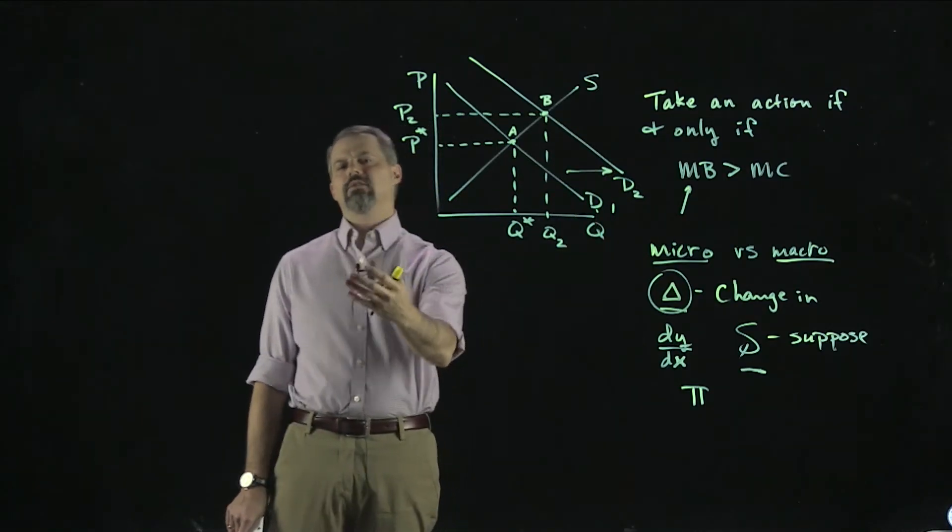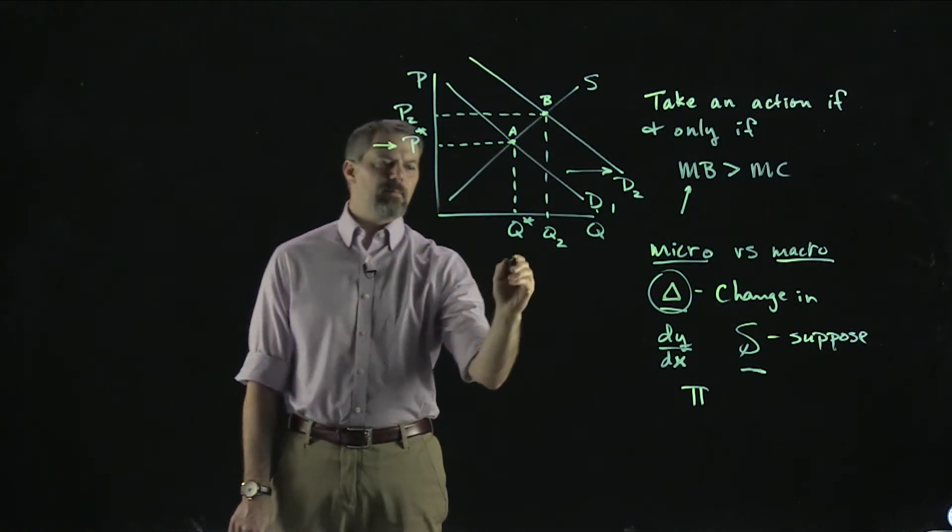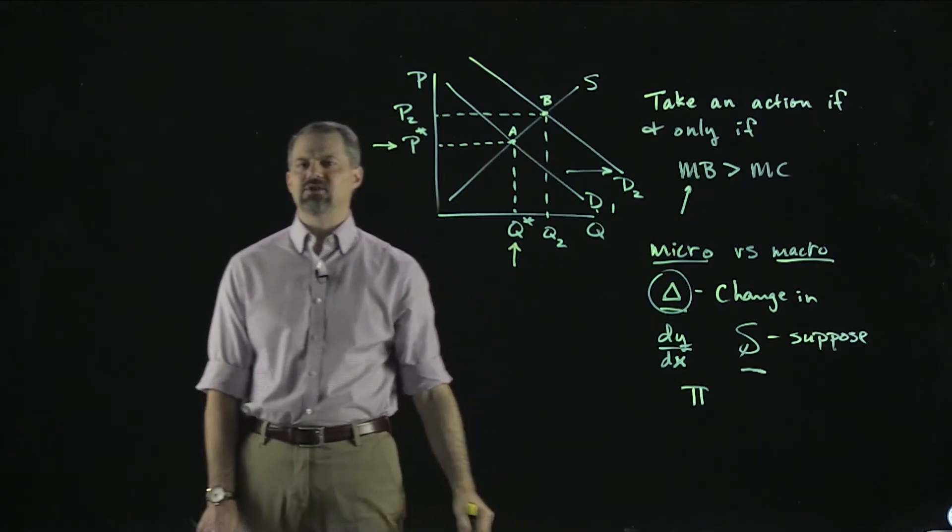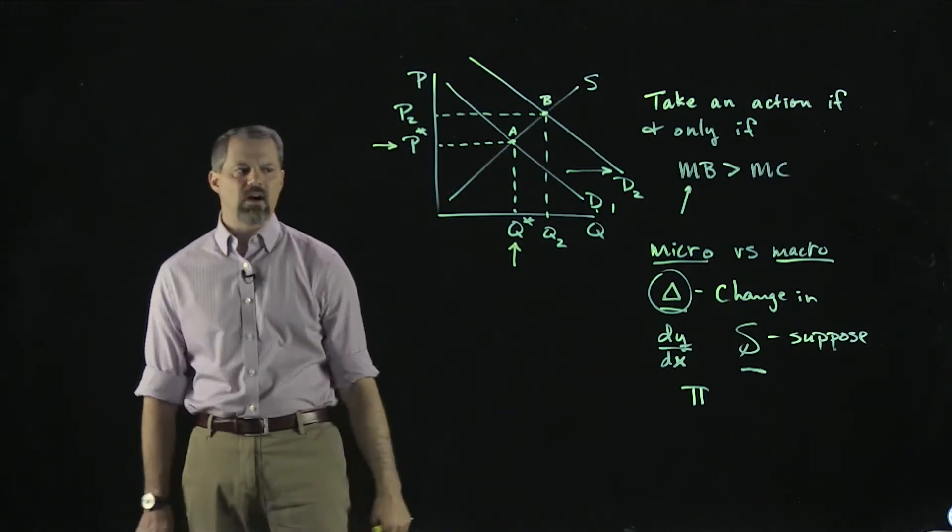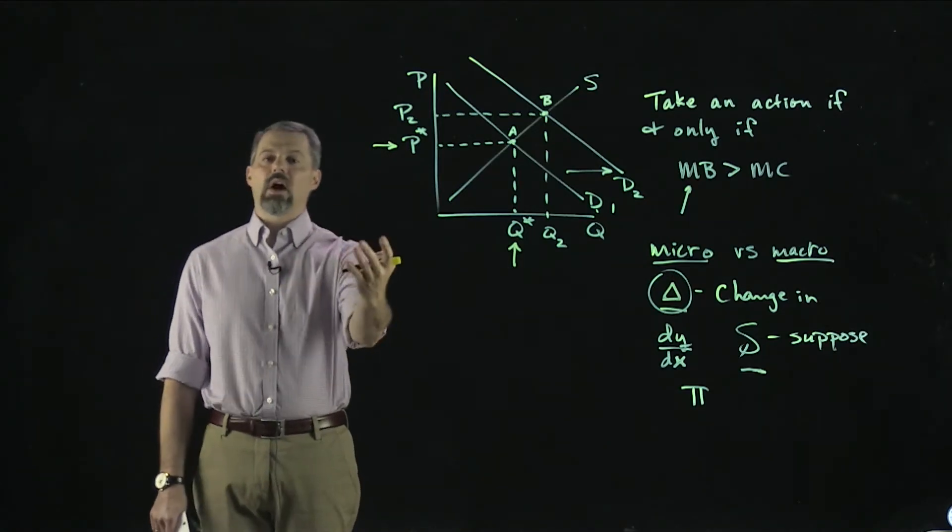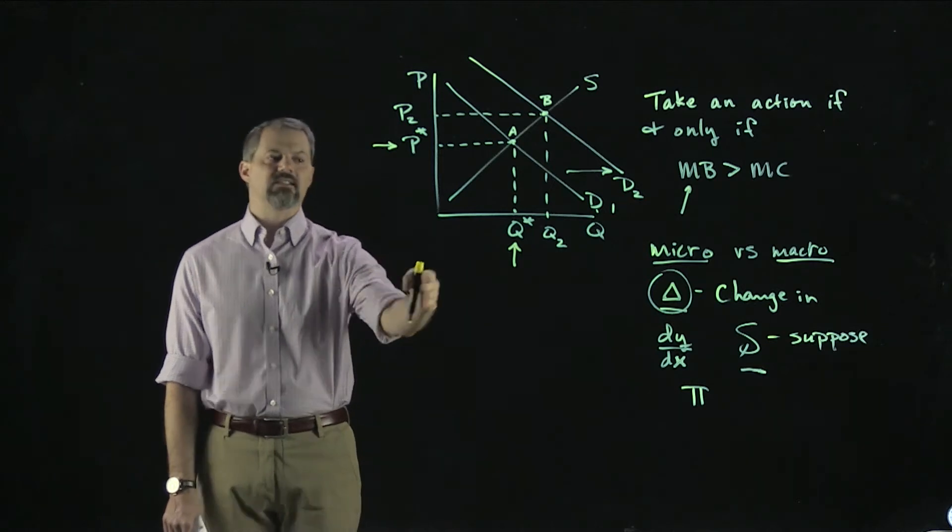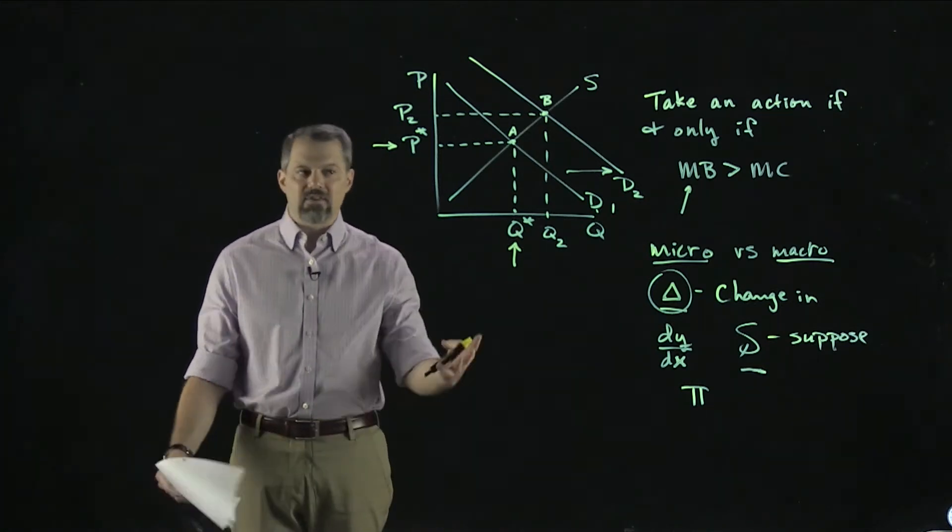Once you know the functional forms for them, we can solve for what that number is. Rather than just saying P* is our initial price and Q* is our initial quantity, we could say that price starts out at $3.50 and our initial quantity starts out at 500 units, for example.